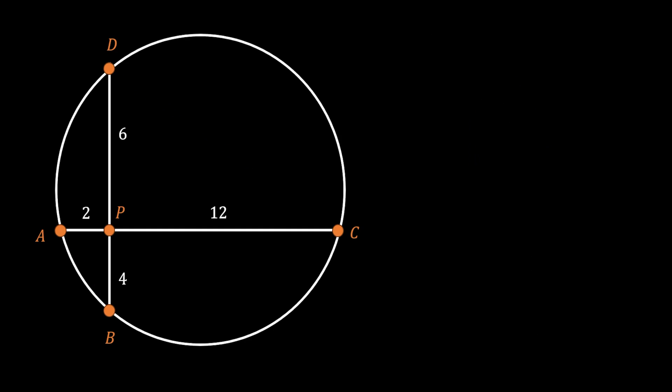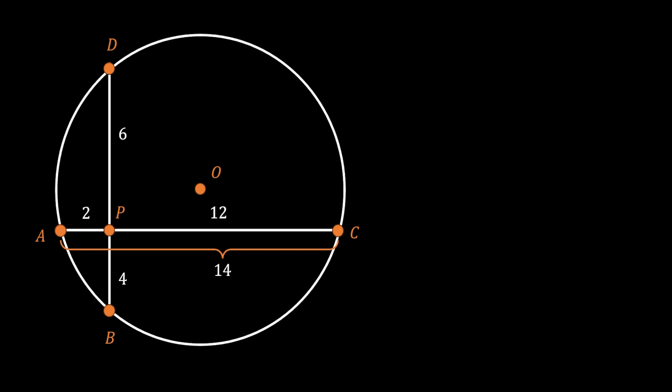Now we will continue with the method of perpendicular bisectors. First, we will mark the center of the circle as O. Looking at chord AC, it has two segments of 2 and 12, so the overall length of this chord is equal to 14. We pull the perpendicular bisector through this chord, and we notice that it must go through the center of the circle and divide chord AC into two identical pieces of 7. Now we try to find the length of the green line representing the distance between point P and the perpendicular bisector.